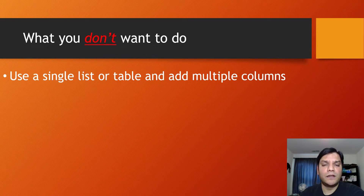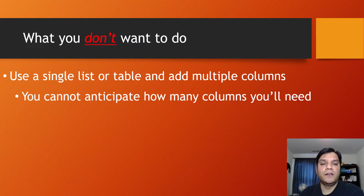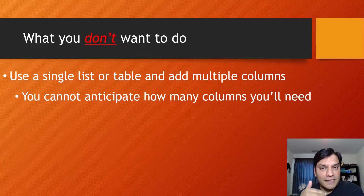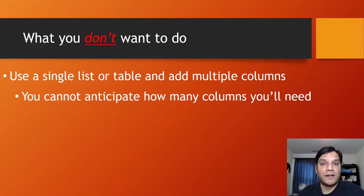What you don't want to do is, say you have a list or a table, keep adding more and more columns based on the number of notes or comments you're going to add. There's just no way you can anticipate what you'll need. You might think you'll only have five or six notes, but in a what-if scenario where you suddenly need seven or eight more, your entire table structure becomes useless.